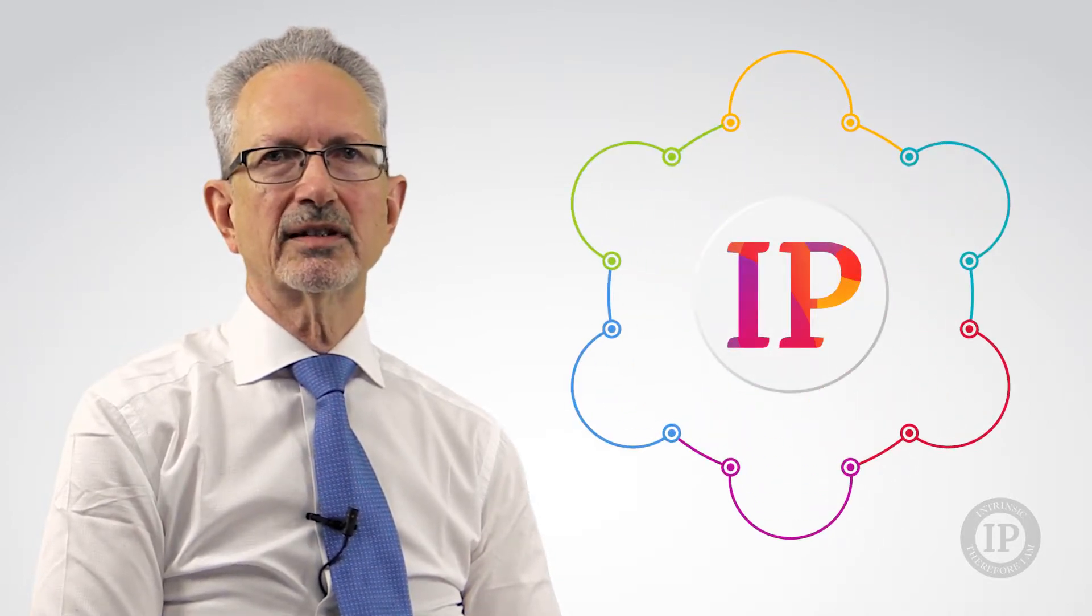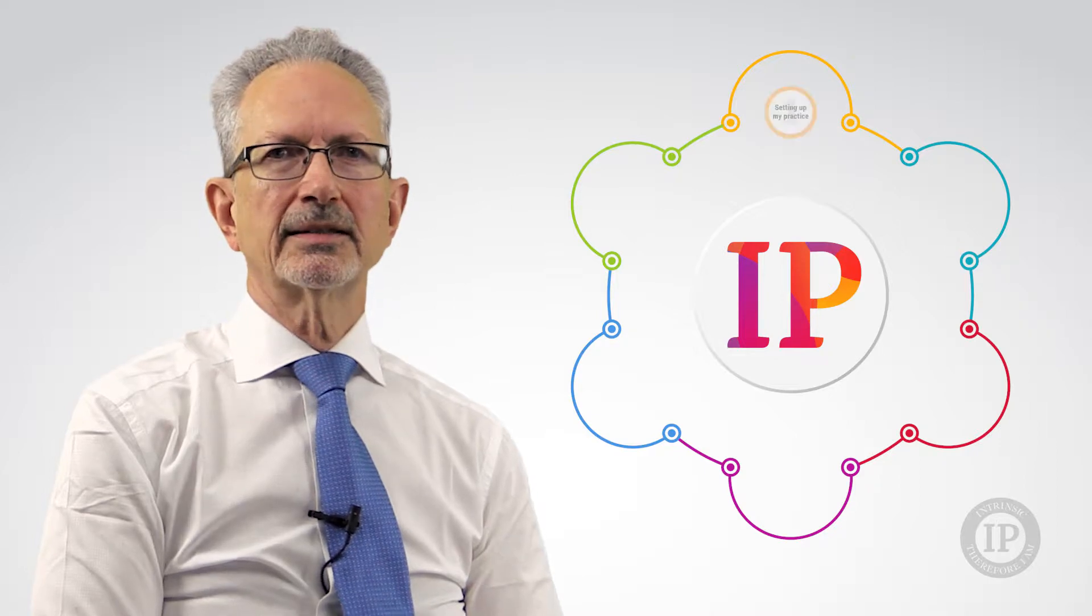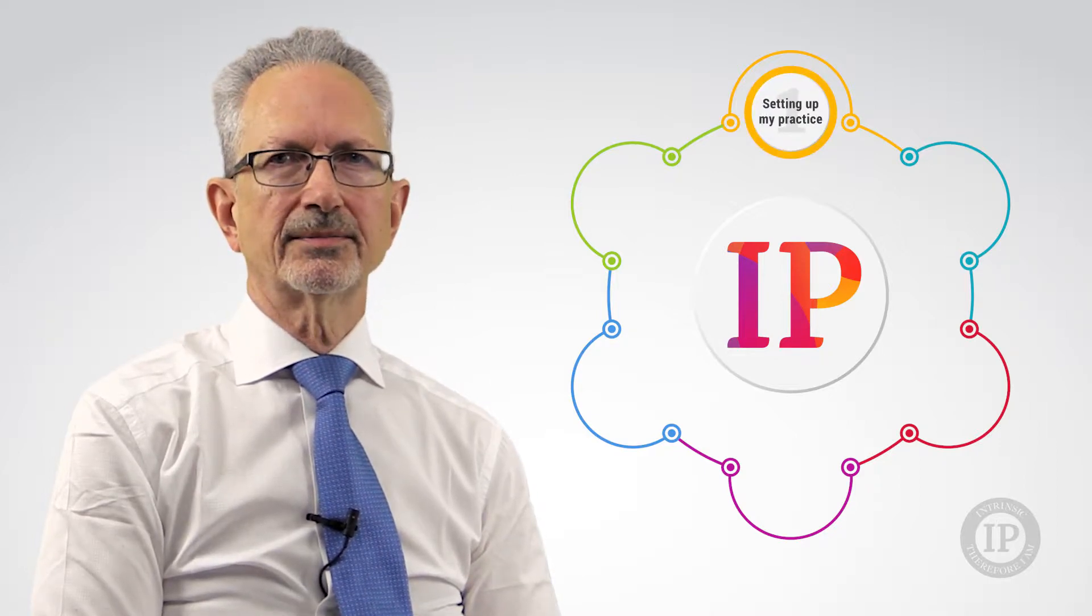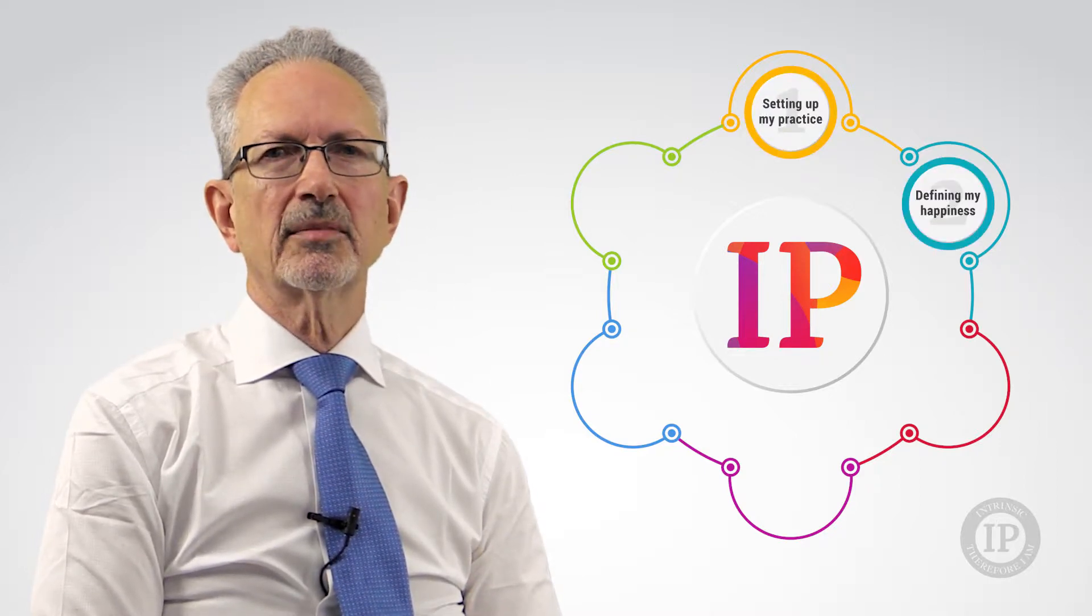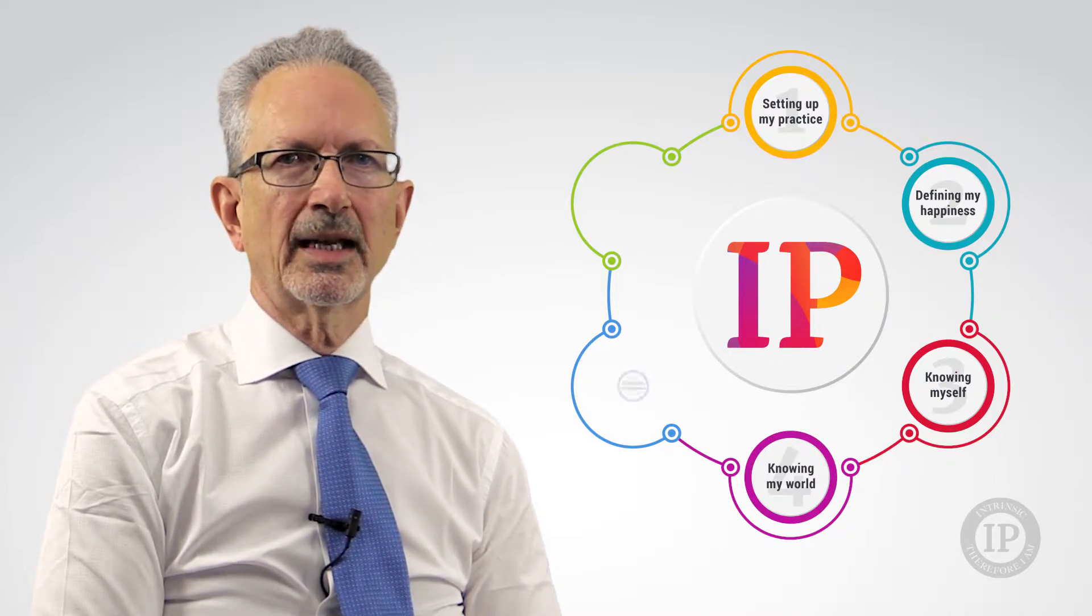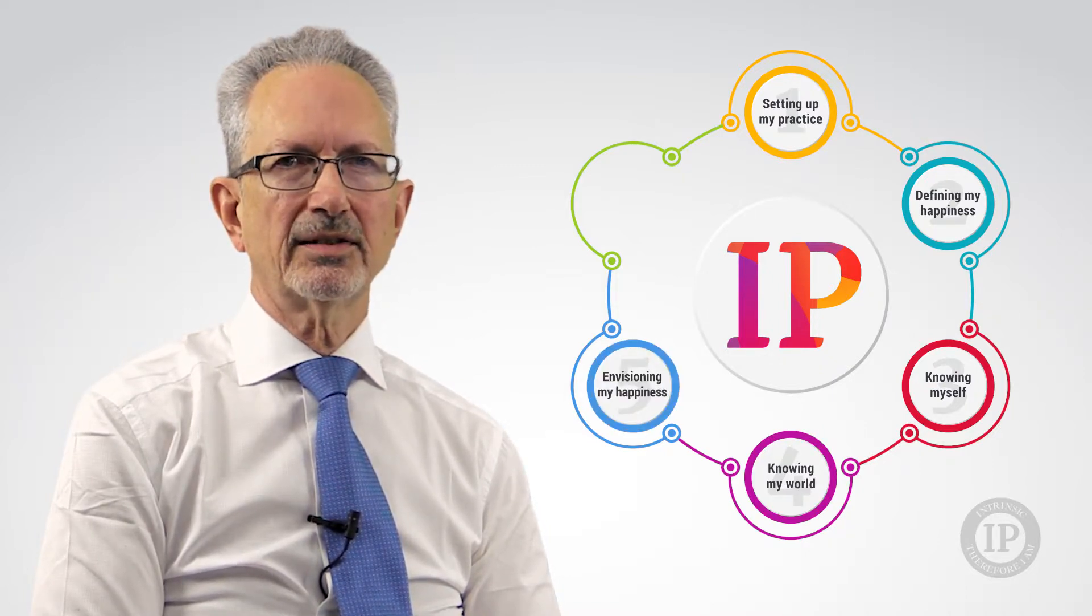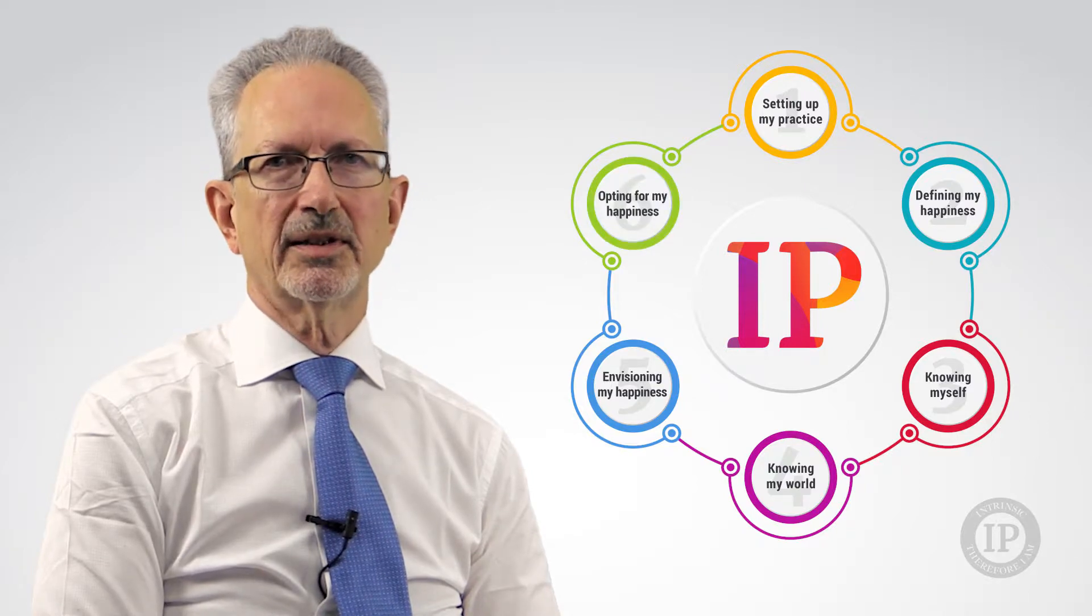There are six steps to the method of the Intrinsic Practice: Setting up my practice, defining my happiness, knowing myself, knowing my world, envisioning my happiness, and opting for my happiness.